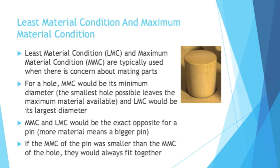Something that comes up quite a bit with GD&T, and something that can confuse people, is least material condition and maximum material condition, typically referred to as LMC or MMC, and there are symbols for each one as well. They are typically used when there is concern about mating parts — two parts coming together. For a hole, maximum material condition would be its minimum diameter. So if you have a small hole, you have as much material as possible. Think about an object with a small hole in it — there's more material in that than if you made the hole bigger. And that can be tricky sometimes, because you might think big hole, lots of material.